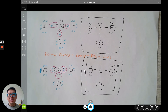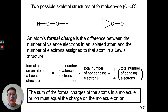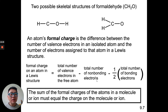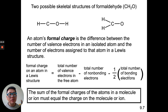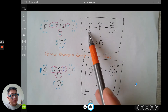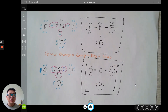Formal charge equals group minus dots minus lines. The group tells us the total valence electrons of a free atom. The dots are the non-bonding electrons. And since every line represents two bonding electrons, half times the bonding electrons equals just the number of lines. The sum of all formal charges of atoms in a molecule must equal the total charge of that molecule or ion.